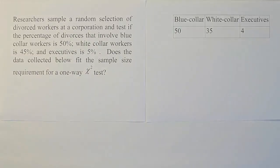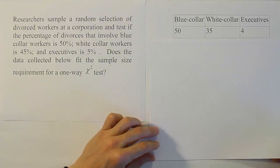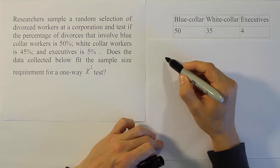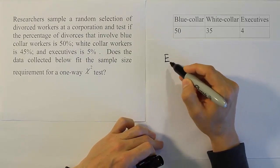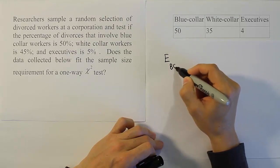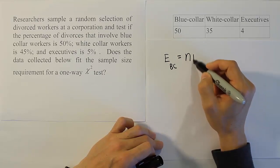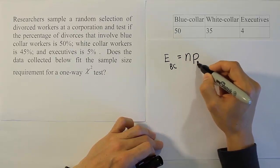For example, if I take a cell like the blue-collar cell, the problem says that that cell is supposed to have 50% of the workers. That means the expected value for the blue-collar workers should be n times p for the blue-collar workers.